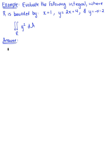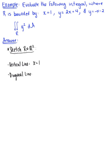The first thing we need to do is sketch this region to determine the bounds. We want to sketch R in the plane. We have a vertical line at x equals 1, and then we have two diagonal lines. Our first line is y equals 2x plus 4, and then we have y equals minus x minus 2.